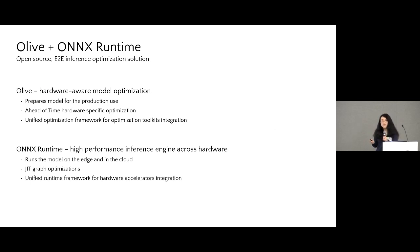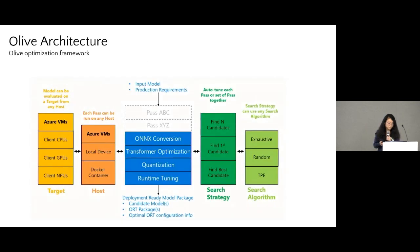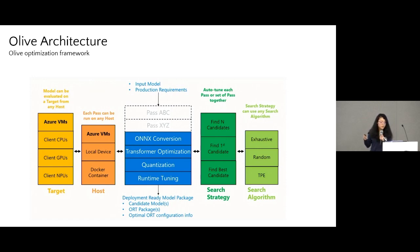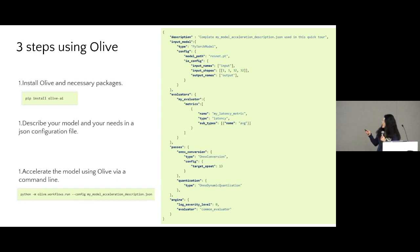Furthermore, Olive serves as a unified optimization framework, seamlessly integrating various optimization tools. On the other hand, ONNX Runtime acts as a unified runtime framework integrating different hardware accelerators. Olive's unified optimization framework complements ONNX Runtime's unified runtime framework, enabling a comprehensive and efficient workflow from model optimization to execution. Here is the Olive architecture — you provide an input model and production deployment requirements, and Olive employs different optimization techniques to output a deployment-ready model package. Utilizing Olive for optimizing a model is straightforward in just three steps.